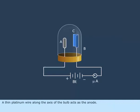A thin platinum wire along the axis of the bulb acts as the anode. When light falls on the cathode, photoelectrons are emitted.